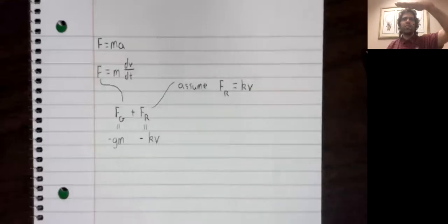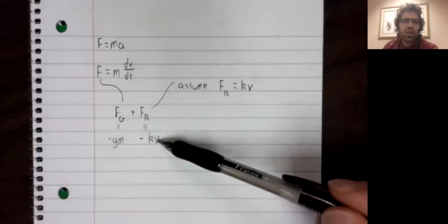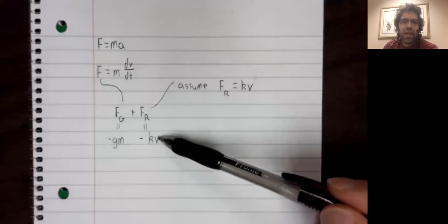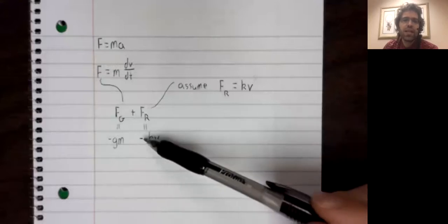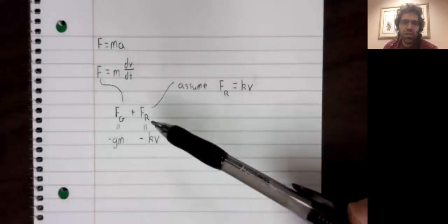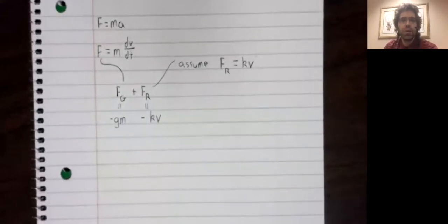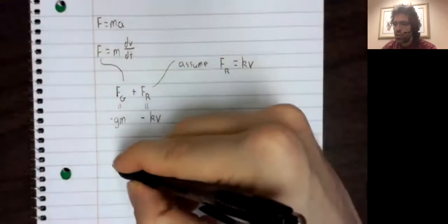Likewise, if the velocity is negative, this opposing force should be positive. And we have that as well. If V is negative, then a negative KV is positive. So this negative sign will ensure that the force is going in the right direction.